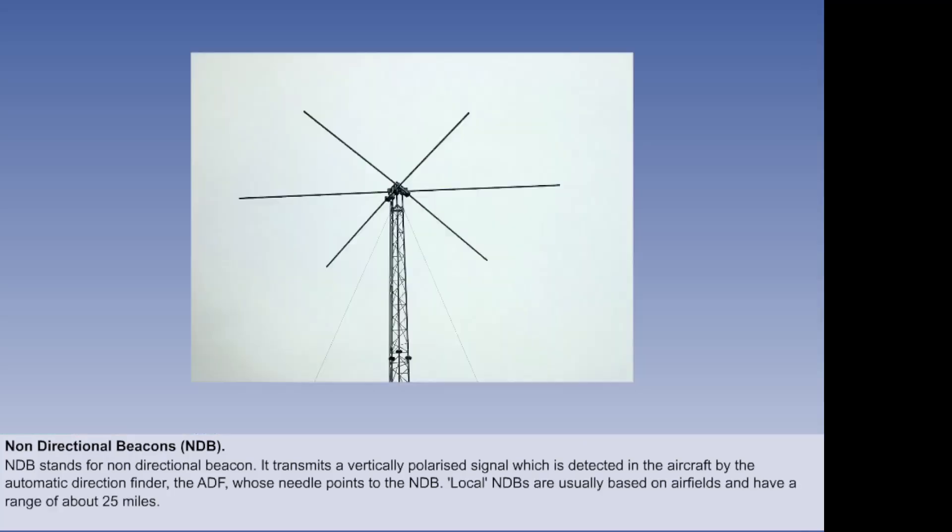NDBs are still widely used for long distance and local navigation. The beacons used for local navigation have a range of about 25 miles, and they are positioned on the airfield so that the pilot can locate the airfield.